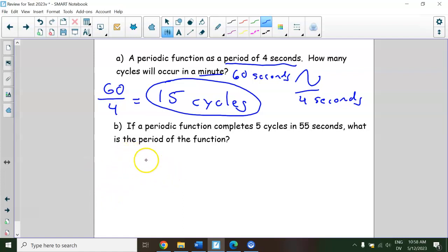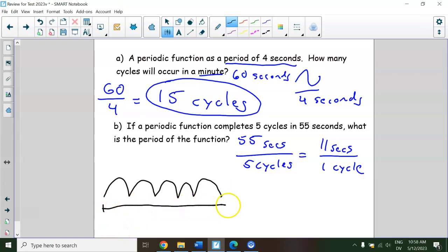Part B is kind of just a different style. So if you're struggling to draw a picture, realistically the answer to this is just you have 55 seconds divided by 5 cycles, and the period is how long for one cycle. So just divide. Do 55 divided into 5 cycles means it's 11 seconds per one cycle. And if you really want to go deep in the weeds, you can draw a picture of it. There's 5 cycles of periodic function, and we know that this is 55 seconds. So you just divide it by 5 again.